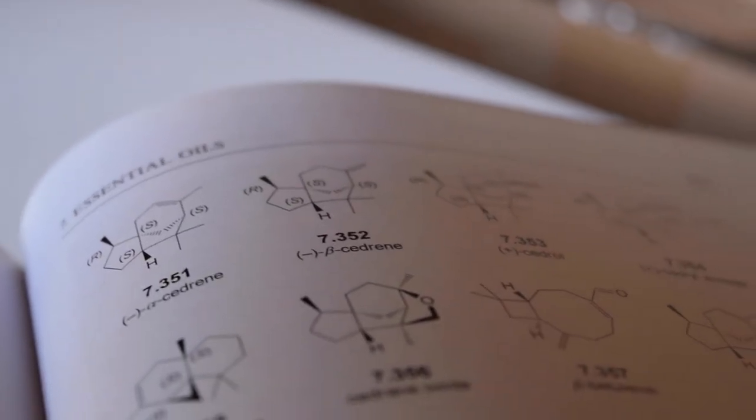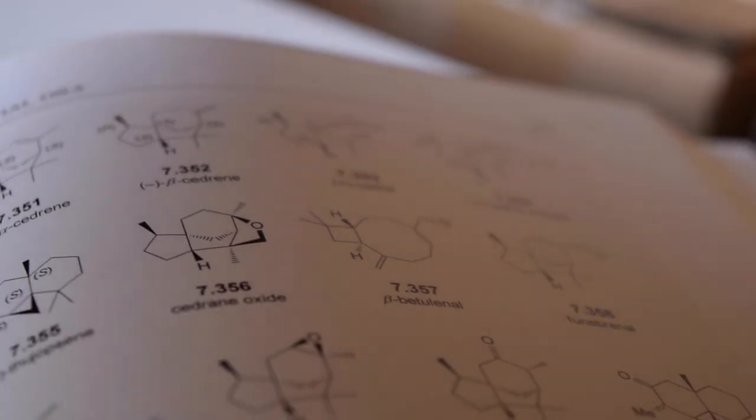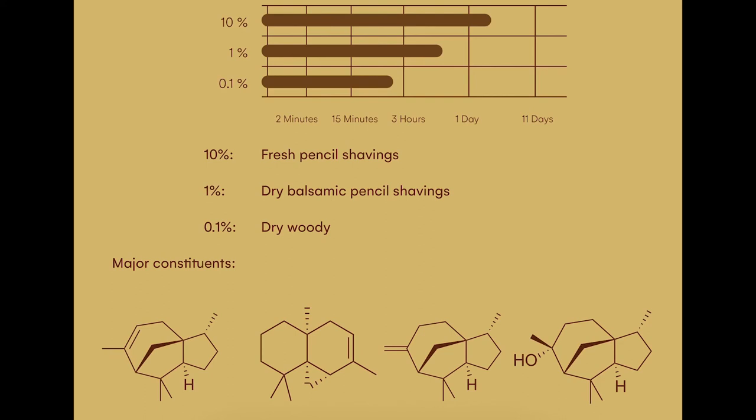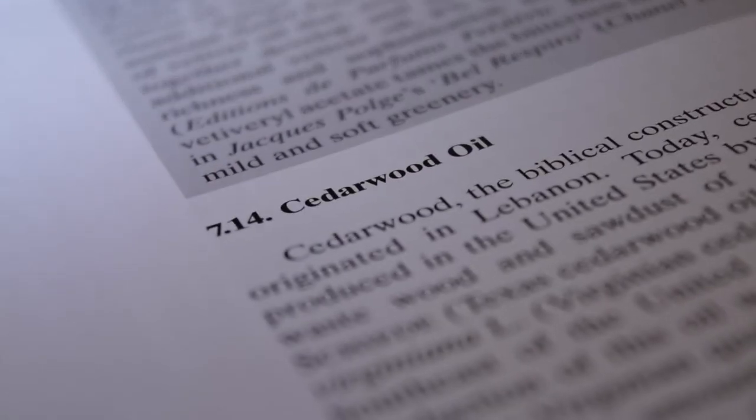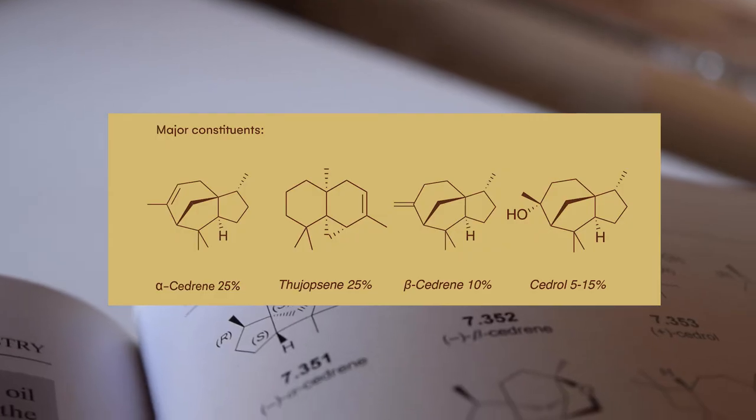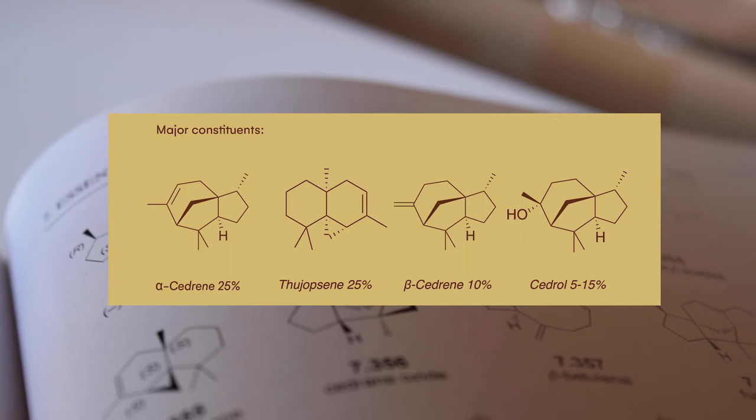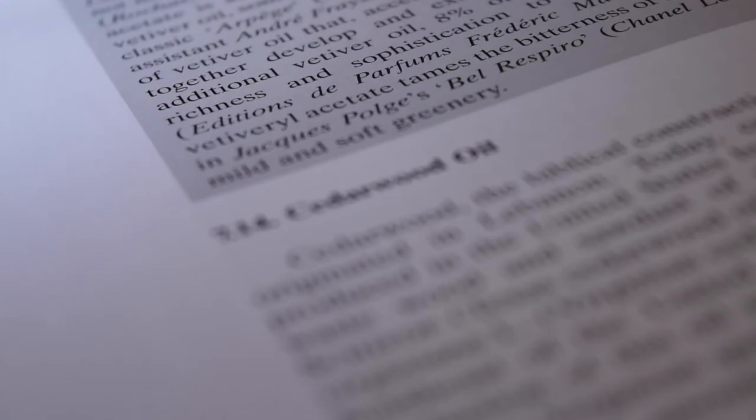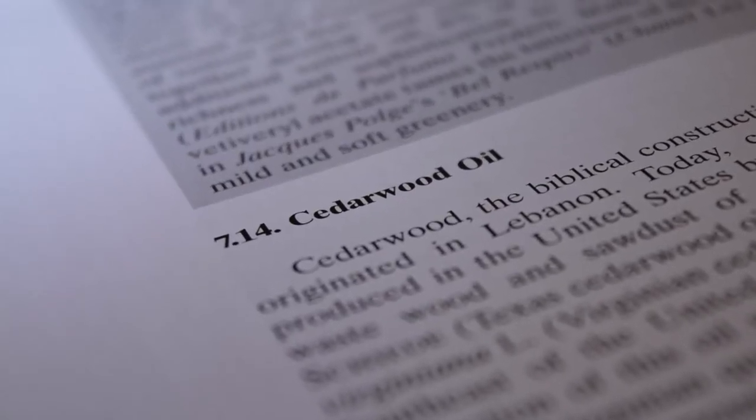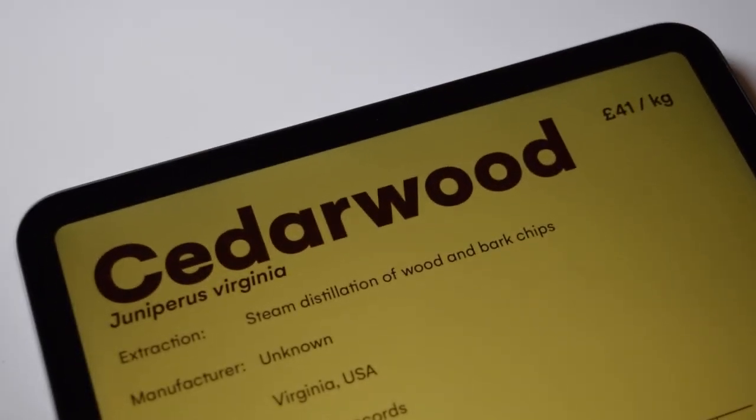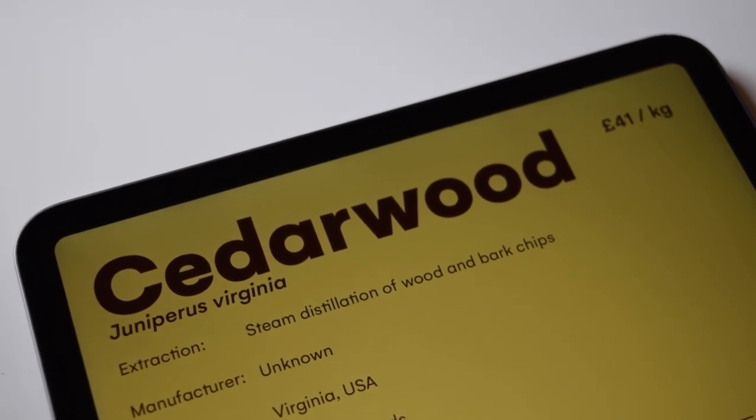And then what's it made of? Well, you've got all of these compounds which have cedar in the name: cedrane and cedrol. I'm pretty sure these compounds are named after the fact that they were found in cedarwood, so these are pretty much what give it its characteristic smell. Also, we've got thujopsene. These compounds look visually quite different to regular terpenes we find in other woods, and that is reflective of the quite unique smell. Cedarwood doesn't smell like pine. It does smell like cedar or like pencil shavings.